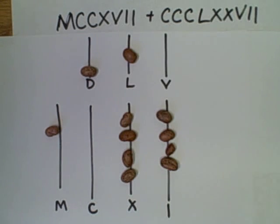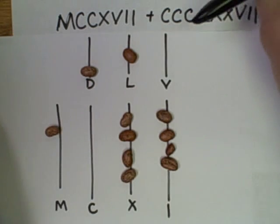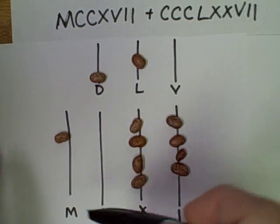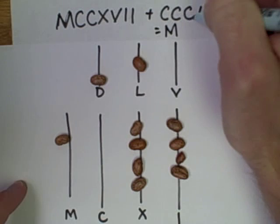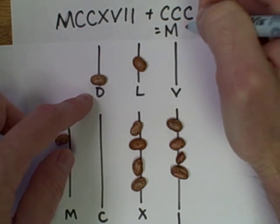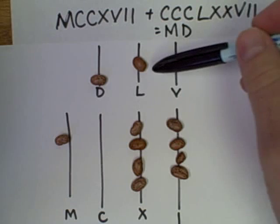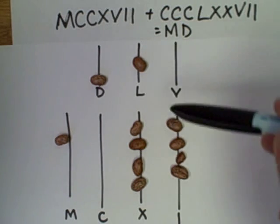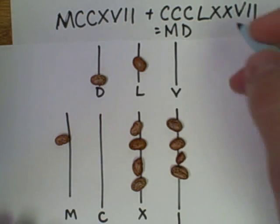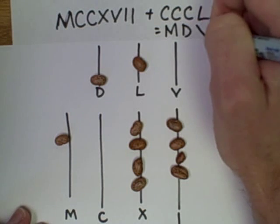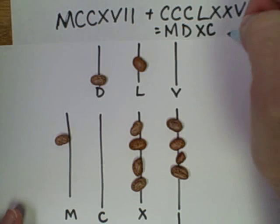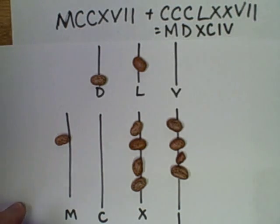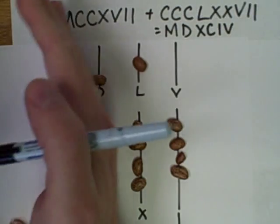And so the sum here, I've got M, I've got D. This row actually is 90, and so instead of writing it as an L and four X's, I'm actually going to put XC for 90, and then with the four I's, I'm actually going to write IV to subtract.